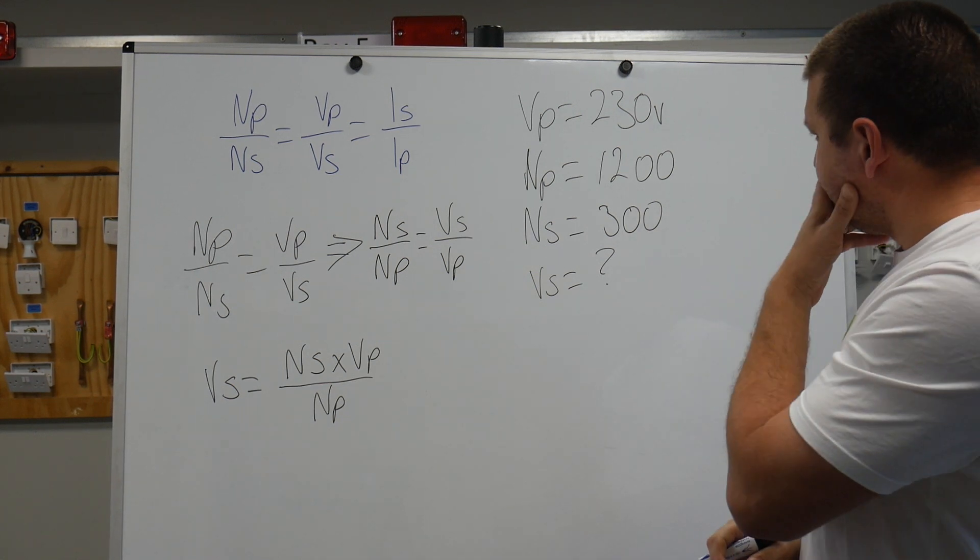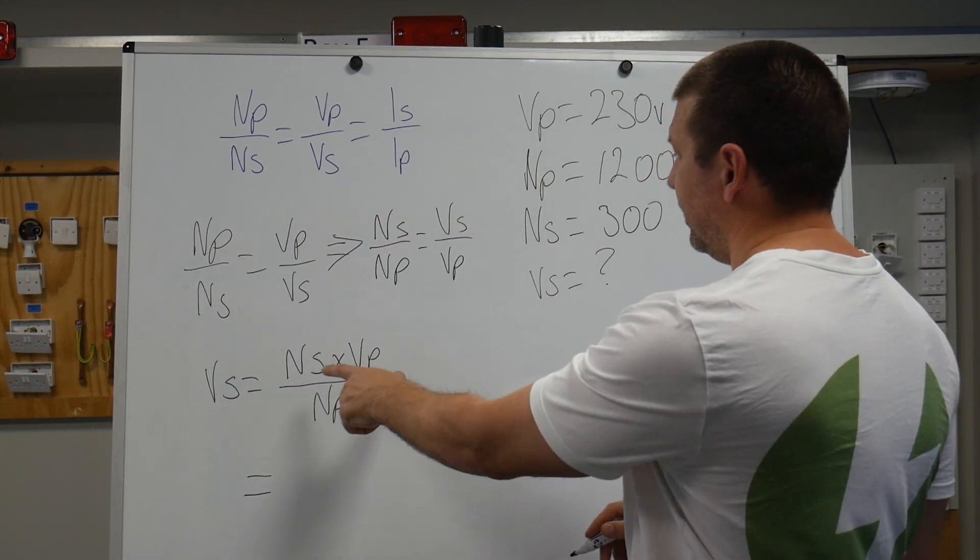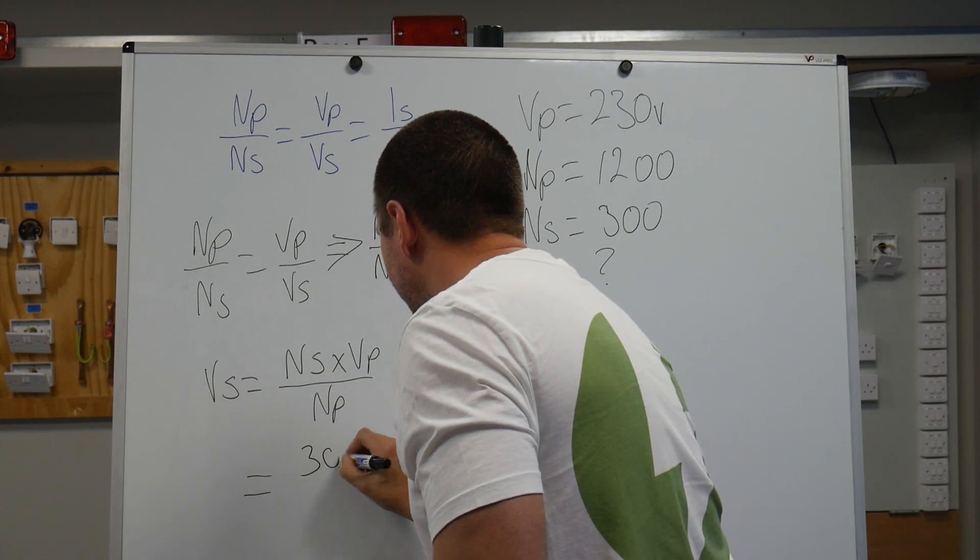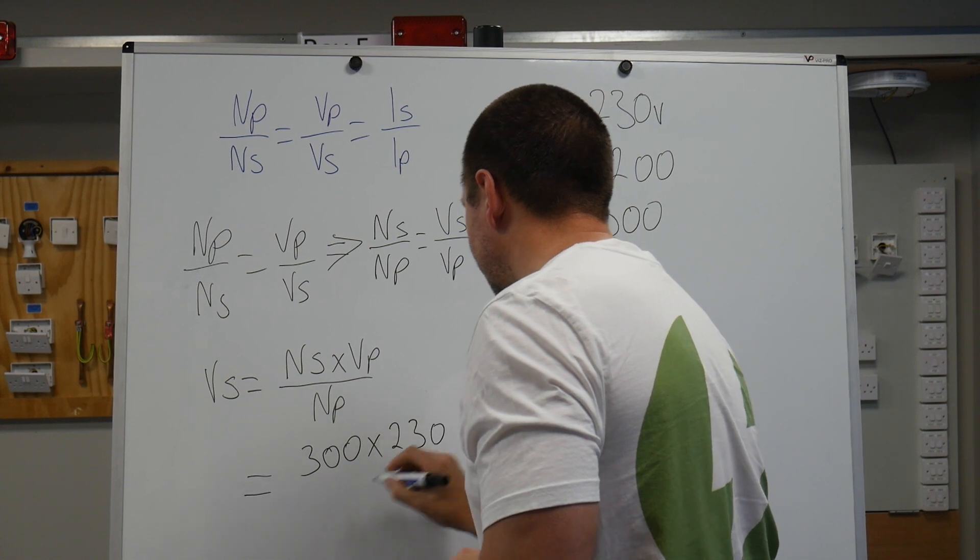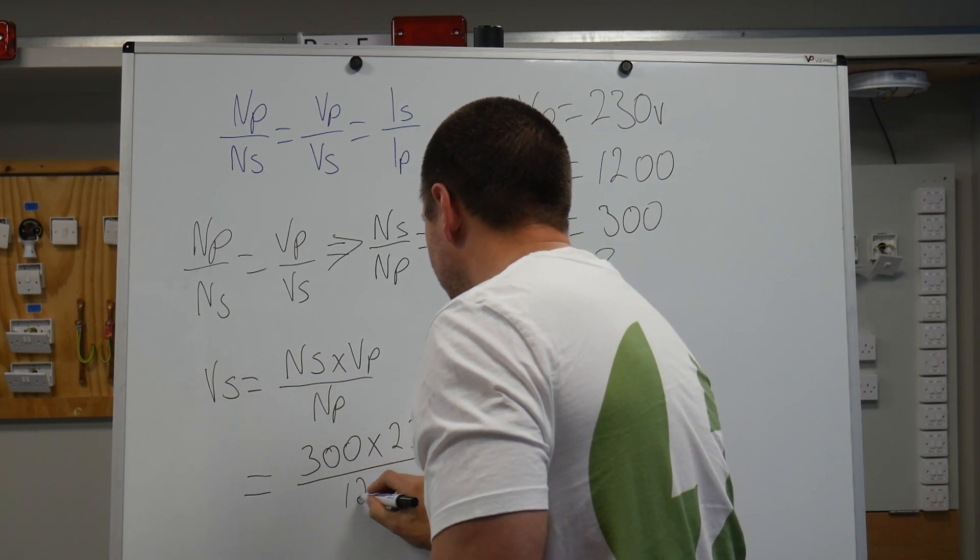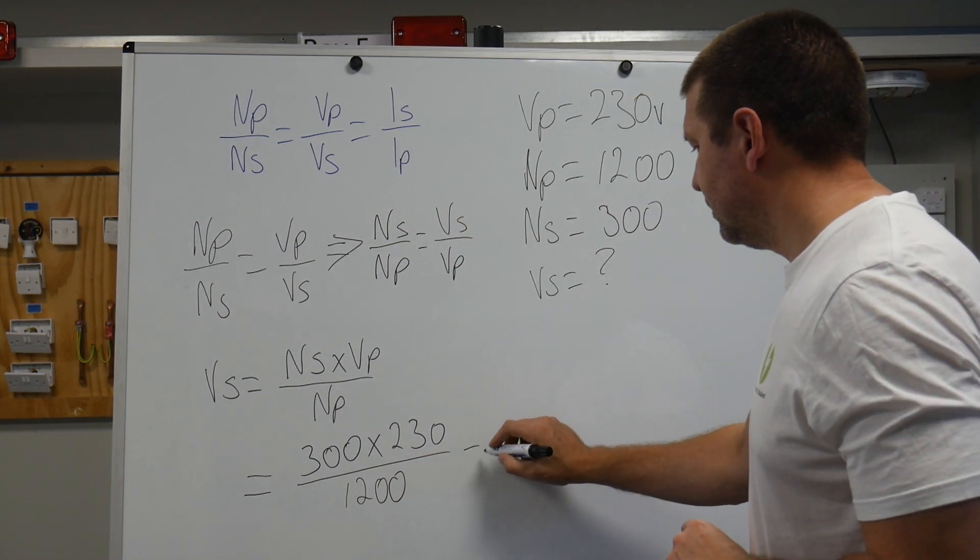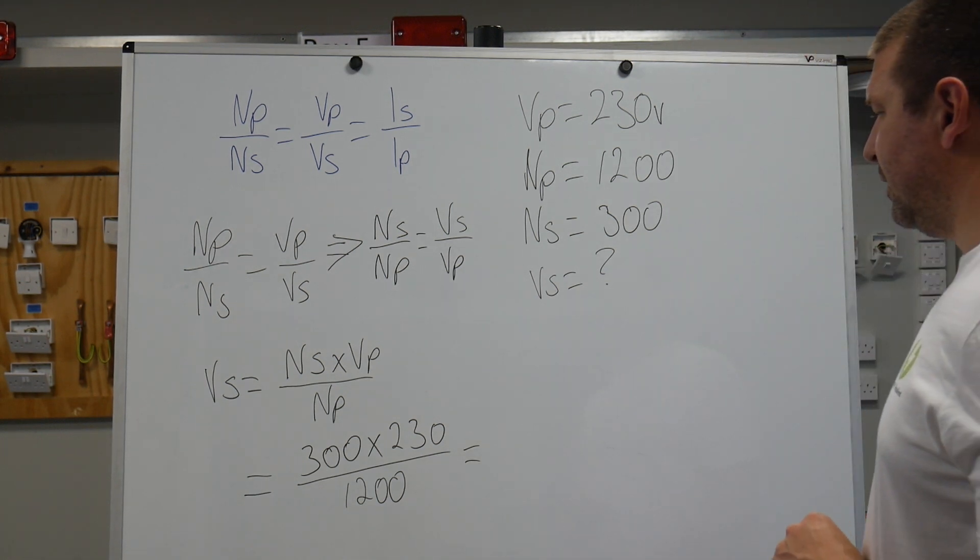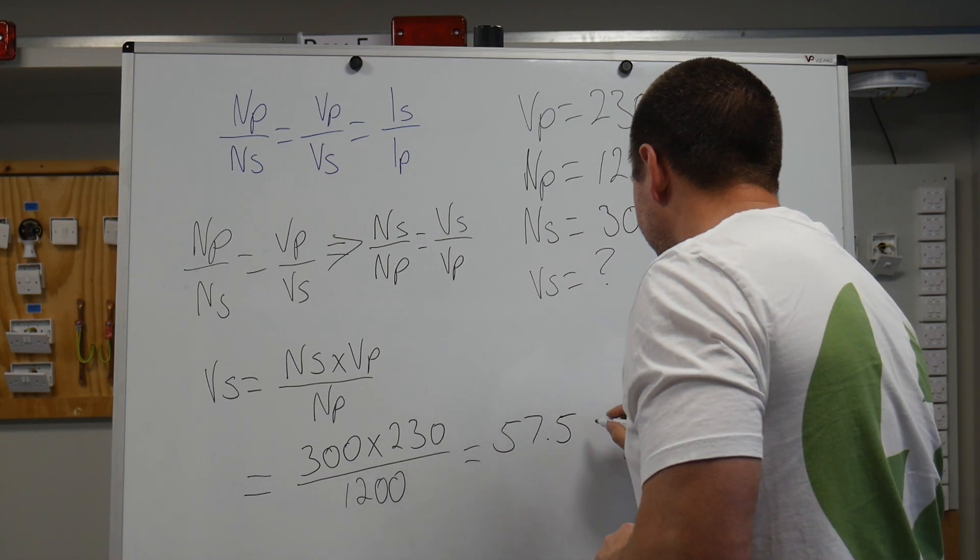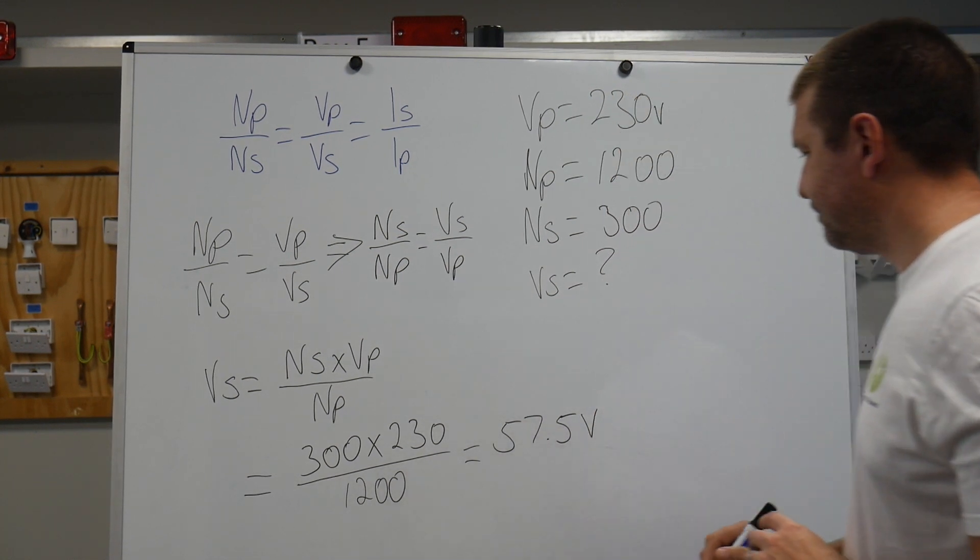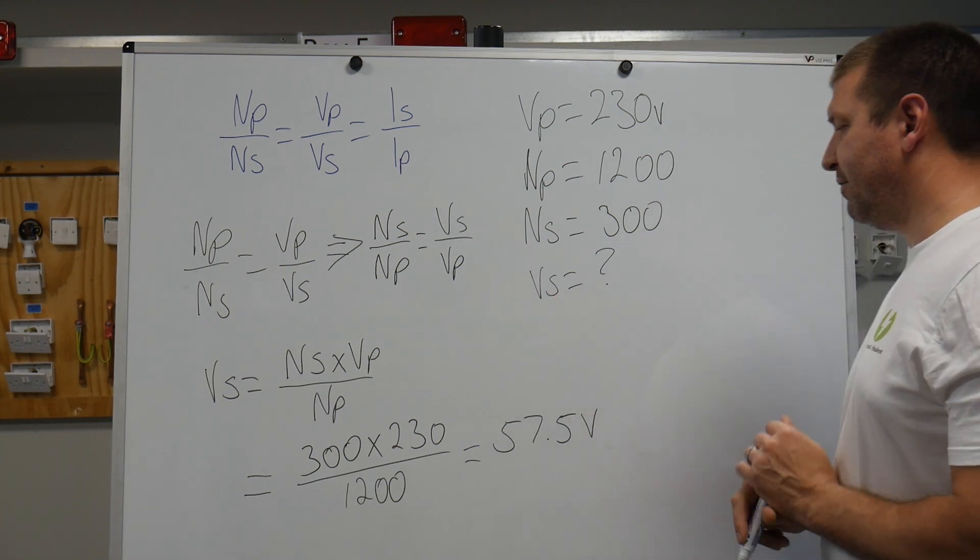Now let's input the values that we've got. So we'll do equals. Ns I said 300 times my Vp 230 over Np is 1,200. And that equals 57.5 volts. This is voltage secondary, so it's 57.5 volts.